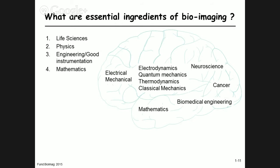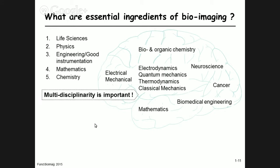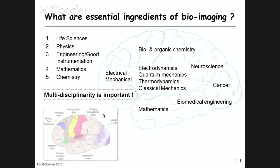Mathematics is central — linear algebra, matrix calculations, and Fourier transformation are all important examples. Chemistry also plays a role: biological chemistry and organic chemistry are relevant because there are molecules we can inject into an organism and modify to change image contrast. The bioimaging field is therefore highly varied and depends on understanding many disciplines — multidisciplinarity is essential.